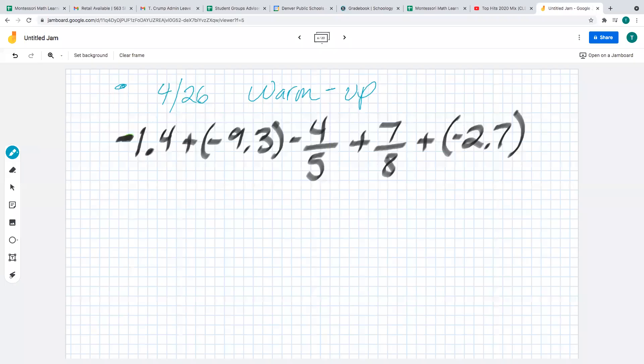All right, so this is the 4/26 exit ticket warmer. All right, and you said get rid of the parentheses, right? So we already know we got a negative 1.4. We get rid of this by just combining the plus and the minus, going to give you a minus.